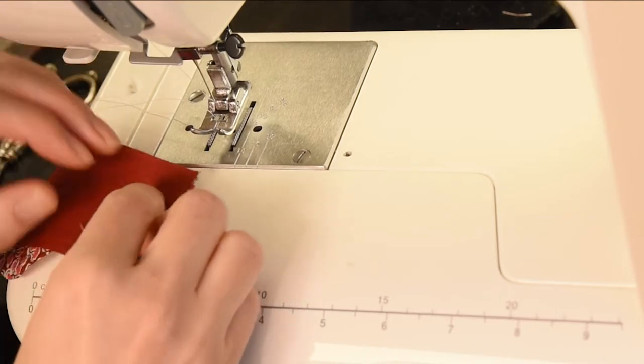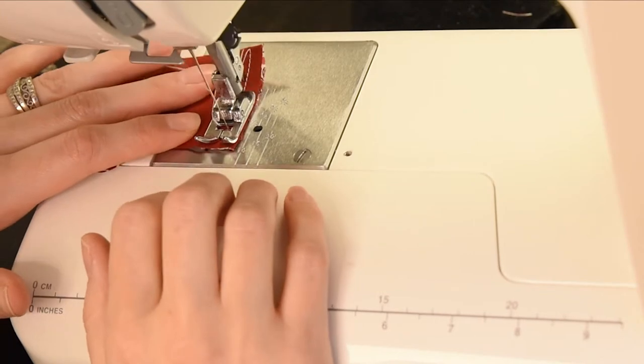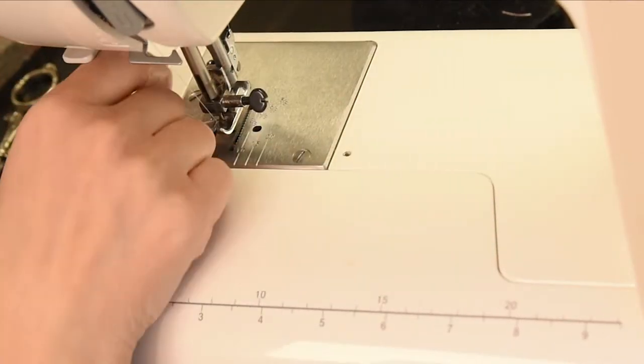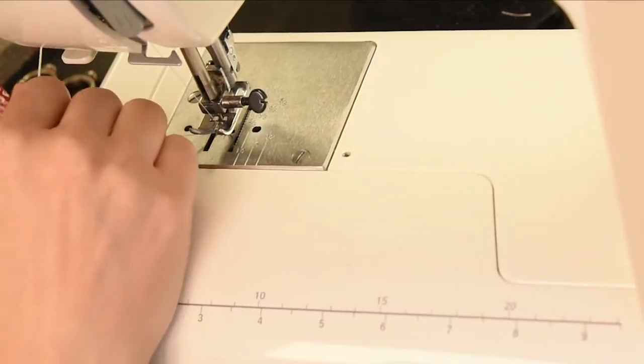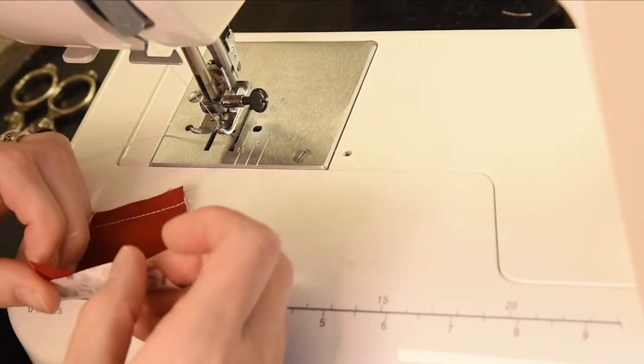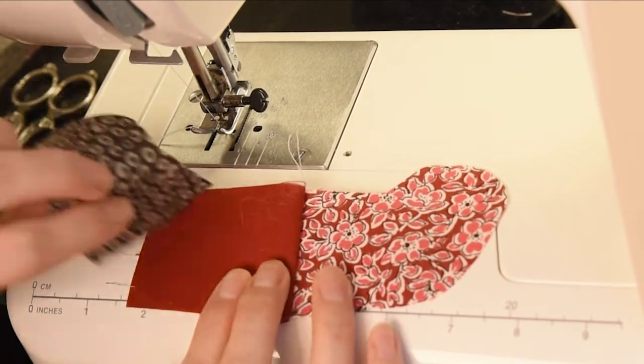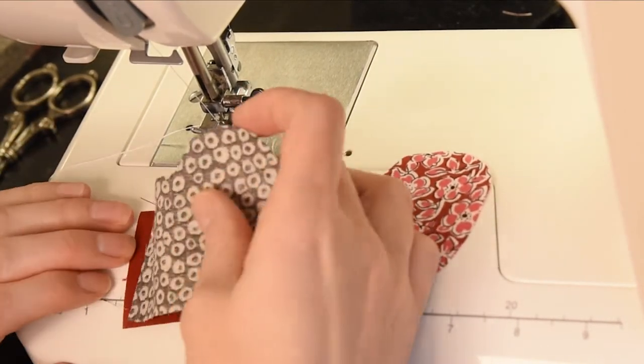Now you're going to sew - this is the outside fabric and the cuff fabric - and we're sewing like sides together. Then we're just going to make sure the toe's going the same direction of that lining fabric.